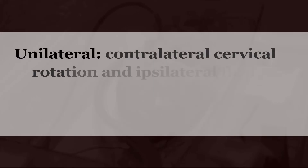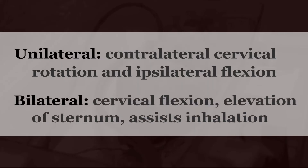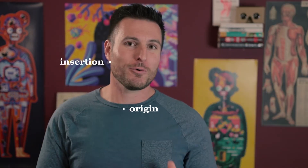When it acts unilaterally, it provides contralateral cervical rotation and ipsilateral cervical flexion, and bilaterally, cervical flexion, elevation of the sternum, and assistance in forced inhalation. And all of that just says: you have two SCMs. If you flex both of them at the same time, you'll bend your neck. If you only flex one, you'll end up rotating it as well. Again, perform the actions — avoid memorizing sentences. Either way, in both cases, the chest remains pretty fixed while the skull is moving, so we label the mastoid process the insertion while the sternum-clavicle area is the origin.